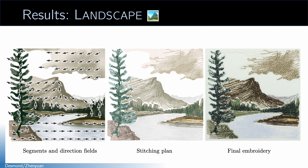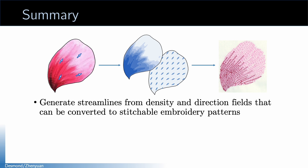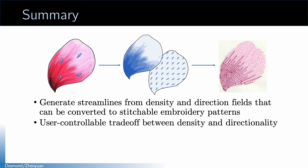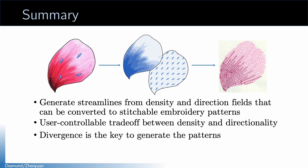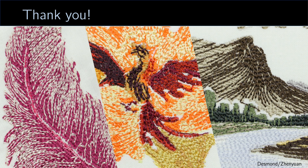So this is the last example, and before I close, just a quick summary and takeaway. Using our method, we can generate streamlines that approximate the density and direction fields with a user-controllable tradeoff. We use them for stitchable embroidery patterns, but you might use it for your own application involving density and directionality as well. The most important insight is to use divergence to guide the generation of the streamlines. If you find our method interesting, please check out our source code on GitHub or visit our project page to find more results and the open-access paper. Thank you for your attention.